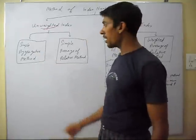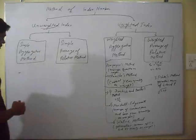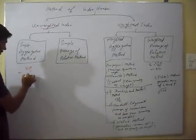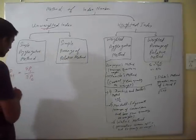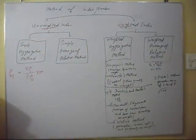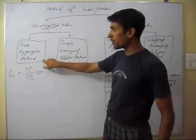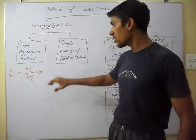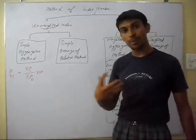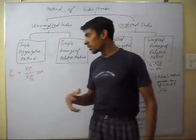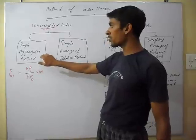First we will calculate the Simple Aggregative Method. The formula is: sigma P1 divided by sigma P0, multiplied by 100. We calculate the total of current year prices divided by the total of base year prices, then multiply by 100. This gives us the index number.